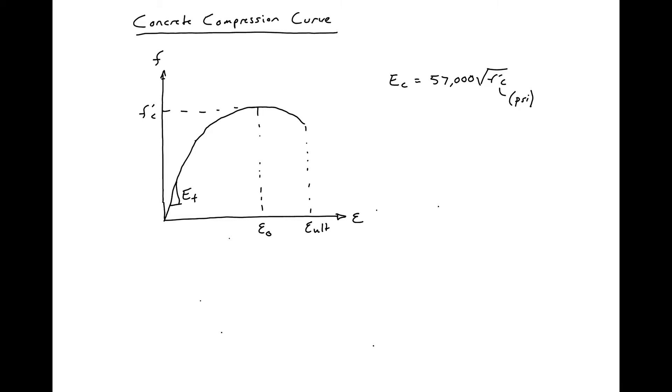Our curve shape will typically be parabolic, at least up to the ultimate stress. And our strain at ultimate is typically around 0.002.